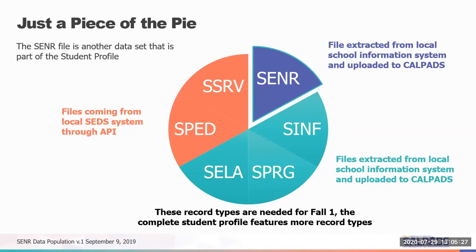The SPED and the SSRV come from the API directly from your special education system. The other file types, including the SENR, may be submitted directly to CALPADS via batch or online maintenance. All of the file types are used to create a student profile. The SENR is the key piece, which allows you to submit all the subsequent student record types.